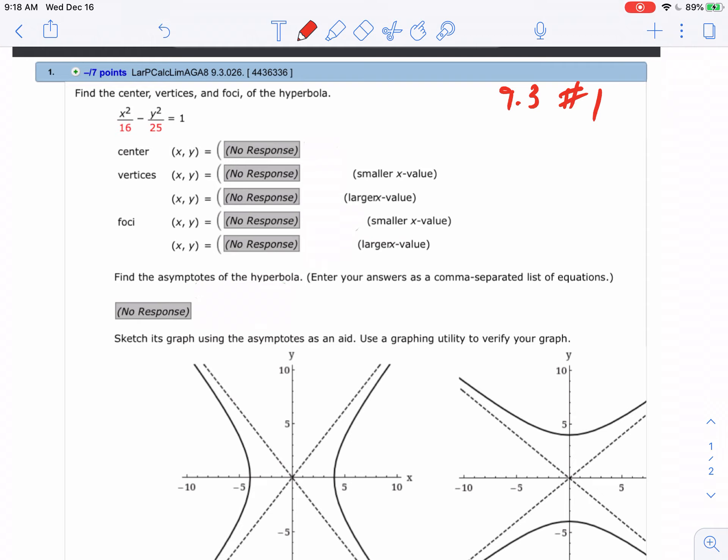The center - there's nothing with the x squared and the y squared, so it's (0,0) for my center. Then if I'm going to find the vertices, what I do is I go to the first denominator.